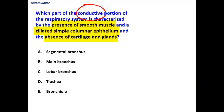The respiratory system consists of a conductive portion and a respiratory portion. In the respiratory portion there is exchange of gases, but in the conductive portion no exchange of gases can take place. The conductive portion consists of the trachea, divisions of the bronchi — main bronchus, lobar bronchus, segmental bronchus — and then the bronchiole, while the respiratory portion consists of respiratory bronchiole, alveolar duct, alveolar sac, and the alveoli. We are asked about the conductive portion of the respiratory system.